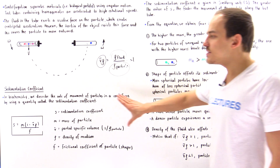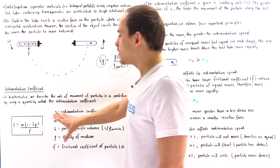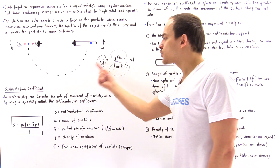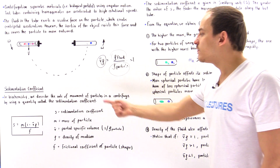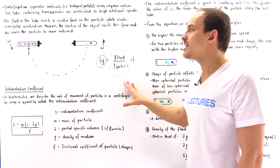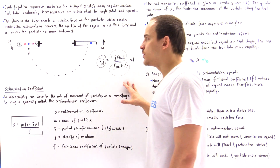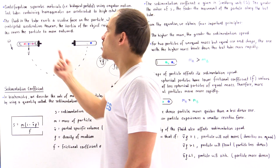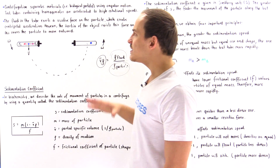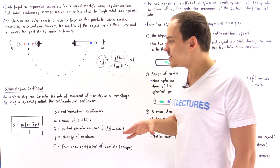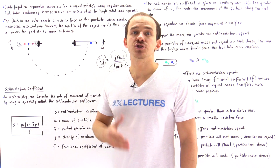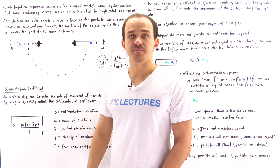So this is the equation we use to describe the rate of movement of particles inside our centrifuge when centrifugation is taking place. In the next lecture, we're going to see where this equation actually comes from.